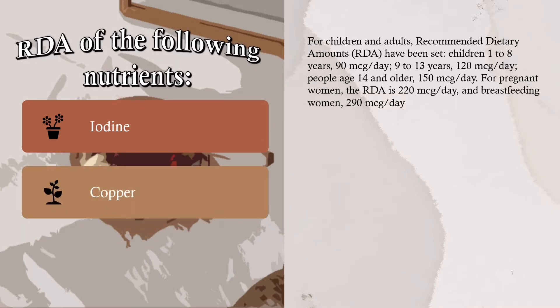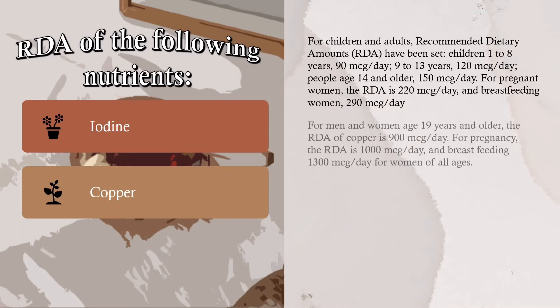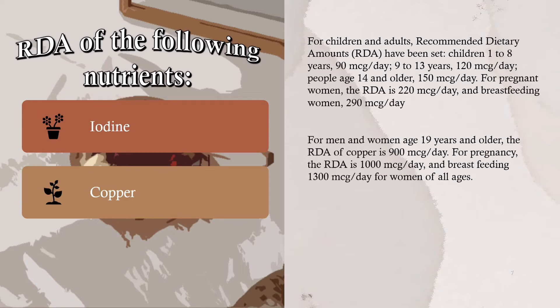Copper: For men and women aged 19 years and older, the RDA of copper is 900 micrograms per day. For pregnancy, the RDA is 1,000 micrograms per day, and breastfeeding is 1,300 micrograms per day for women of all ages.